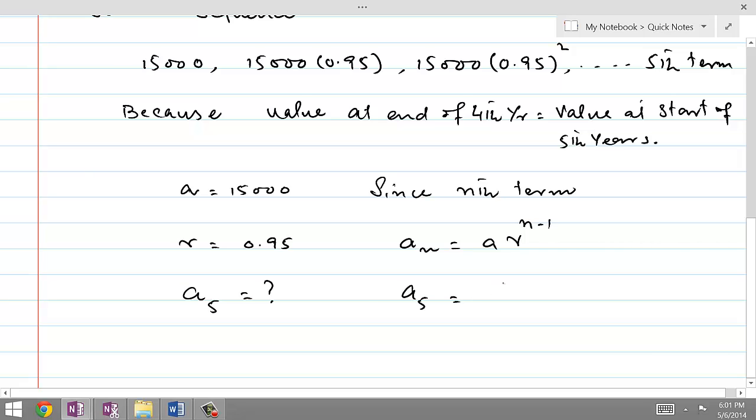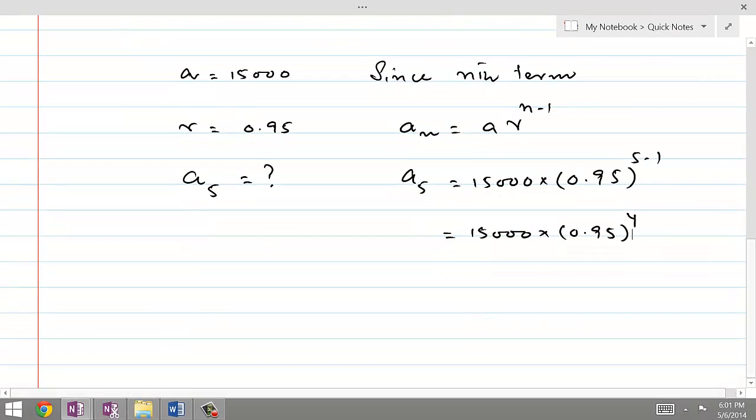So A5 is equal to 15,000, which is value for a, times r, which is 0.95 to the 5 minus 1, and this would be 15,000 times 0.95 to the power 4. If we perform these calculations, this will be equal to 12,217.59 dollars. That's value of automobile which was purchased for $15,000 four years ago.